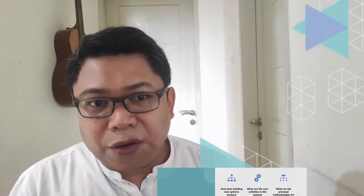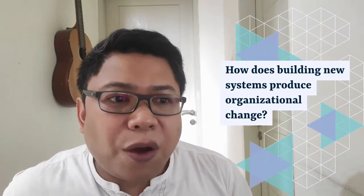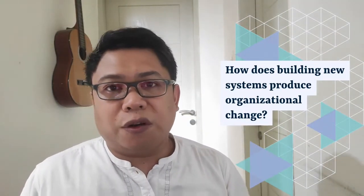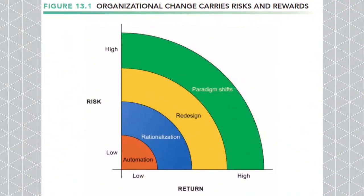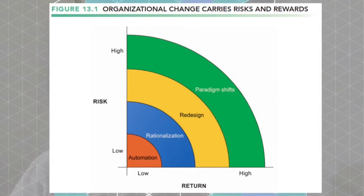How does building new systems produce organizational change? There are four categories of organizational change: automation, which carries low risk and low return; rationalization; redesign; and paradigm shifts, which carries high risk and high return. I will discuss each one of these in the next slide.